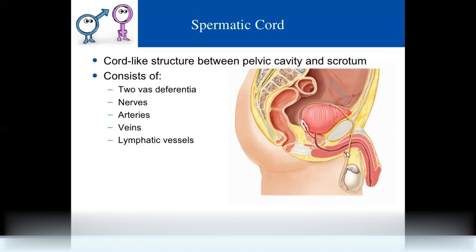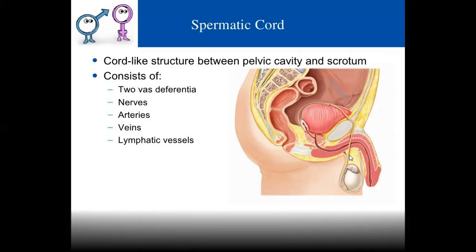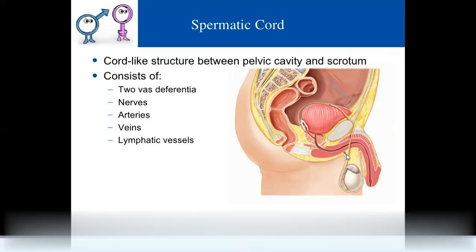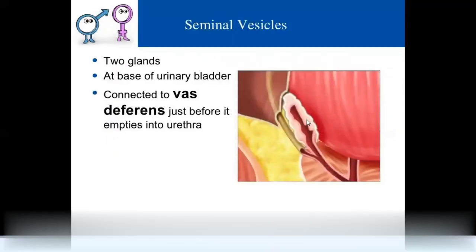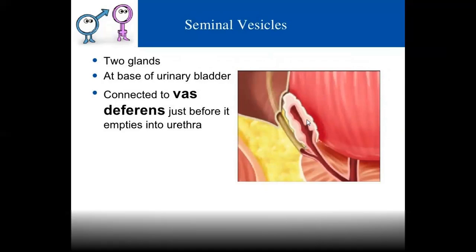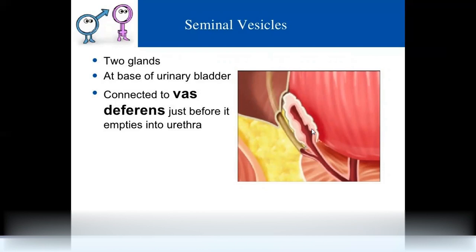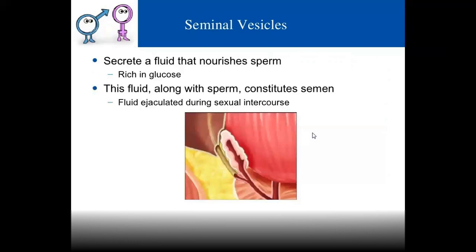There are two seminal vesicles located at the base of the urinary bladder, connected to the vas deferens. Along with transporting sperms, the seminal vesicles release secretions that nourish the sperms. These secretions contain glucose, providing energy for sperm motility.